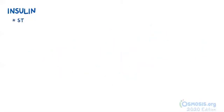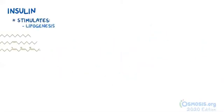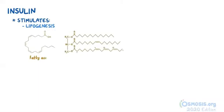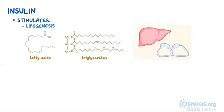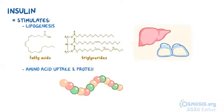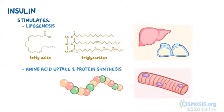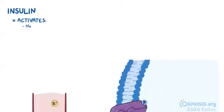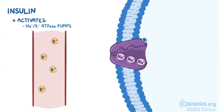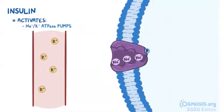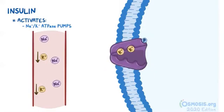Insulin also stimulates lipogenesis — the synthesis of fatty acids and triglycerides in the liver and adipose tissue — and amino acid uptake and protein synthesis in skeletal muscles. Finally, insulin activates sodium potassium ATPase pumps and shifts potassium into intracellular space, thereby decreasing potassium levels in the blood.